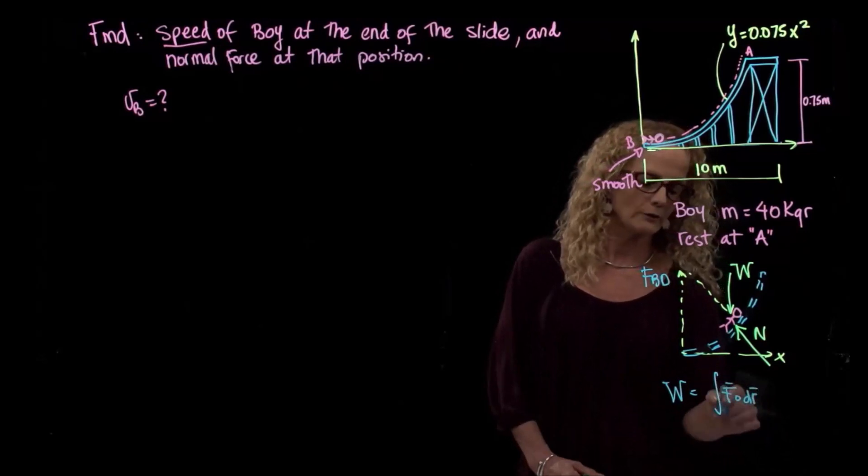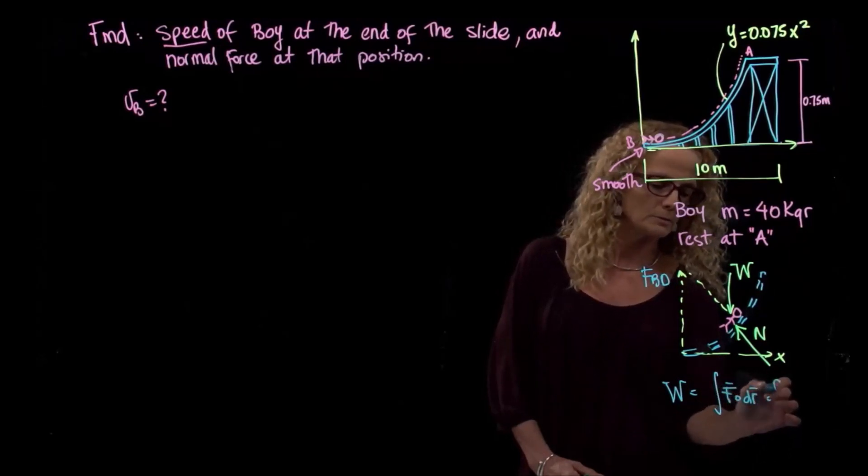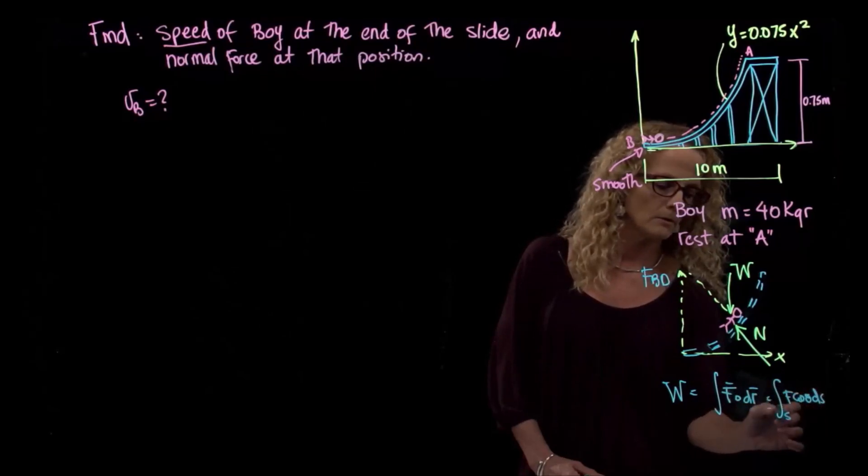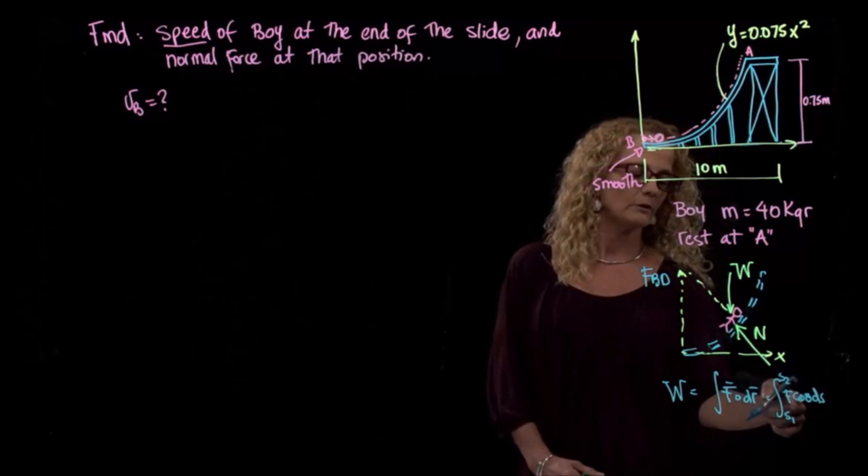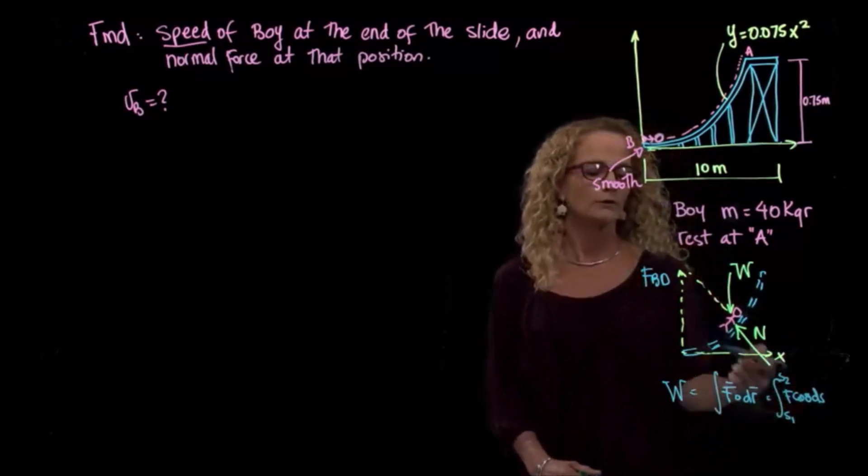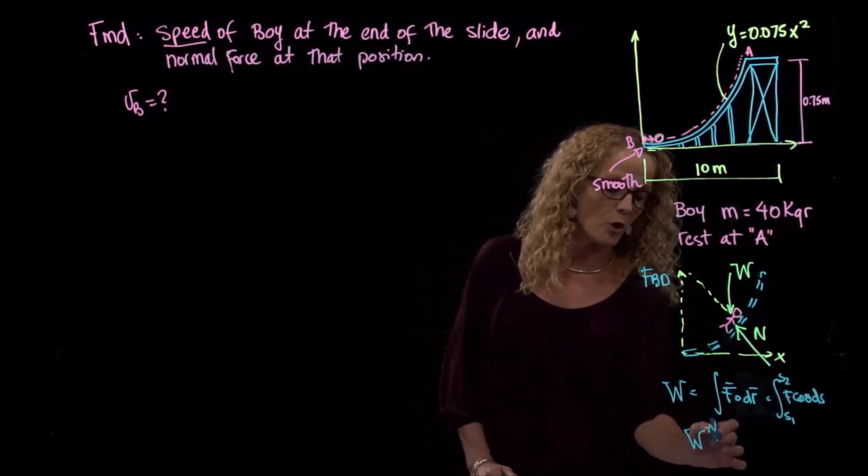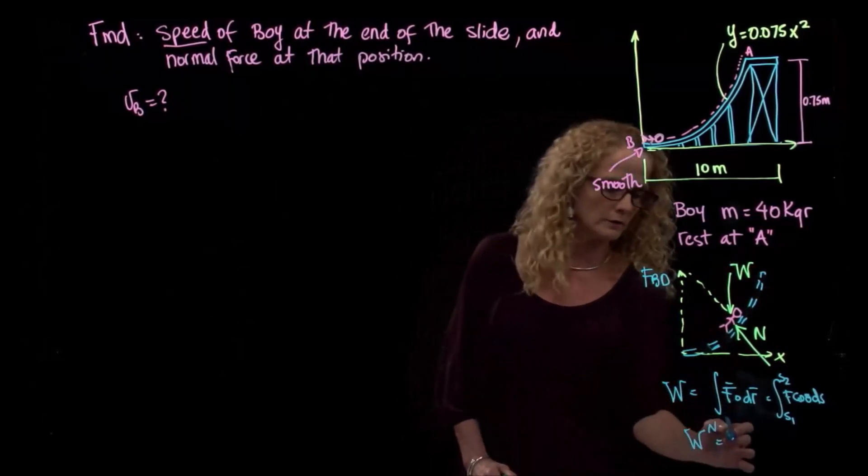So these two have to be in the same direction, which means, so if there is no motion in the direction of the force, we have no displacement. So the work done by the normal force all along the trajectory is equal to zero.